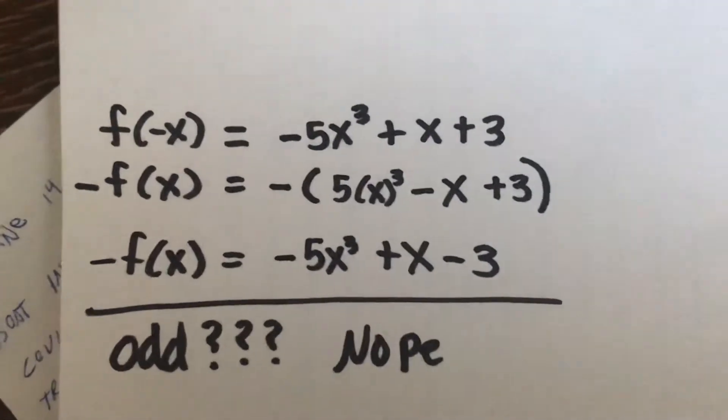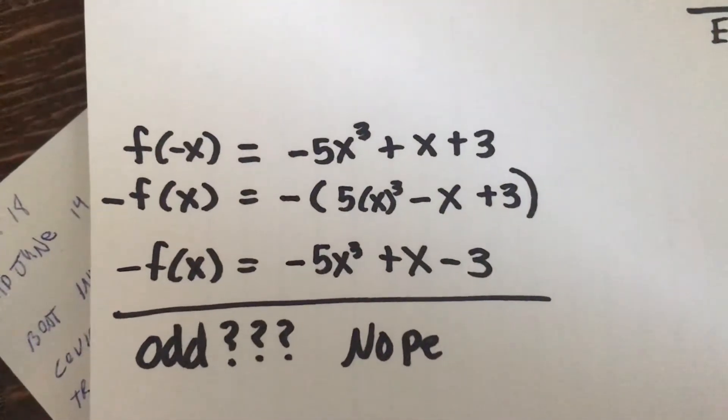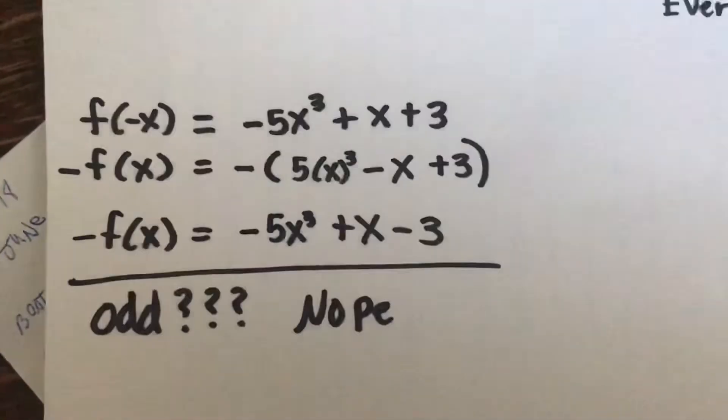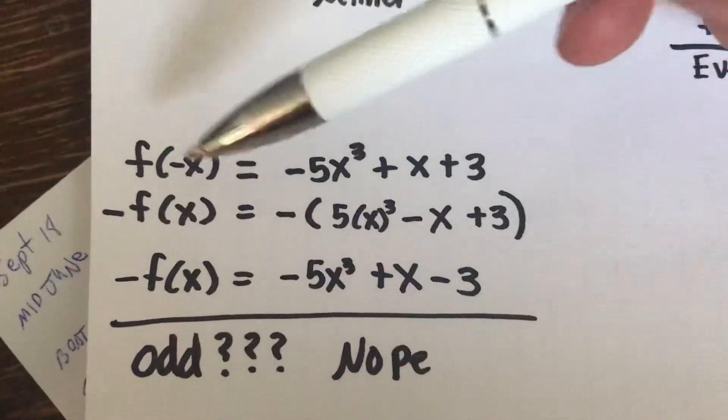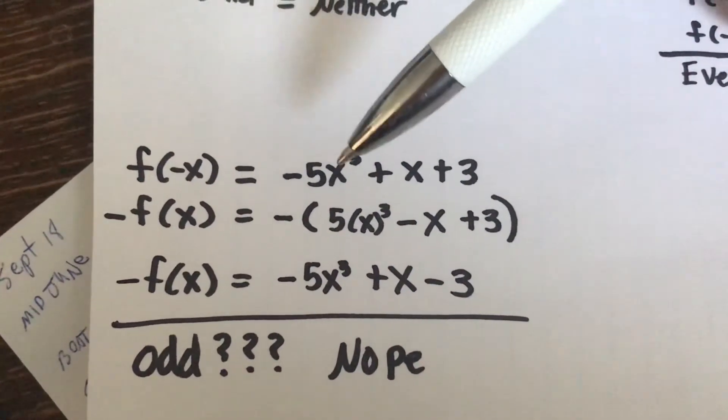Now we're going to take a look and see if it is odd. Remember, if it's odd, that means that negative x equals negative f of x. So we've got our same f of negative x equation here, which is equal to negative 5x to the third plus x plus 3.